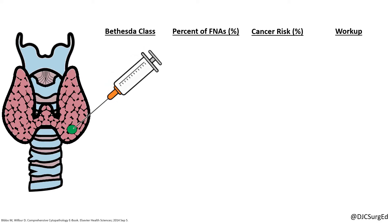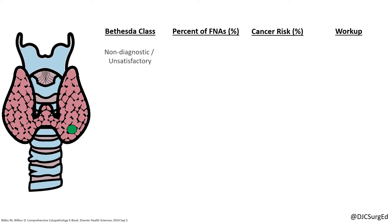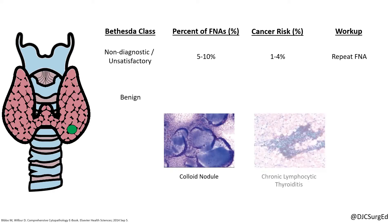Spongiform nodules should be evaluated if greater than or equal to 2 cm in size. The Bethesda criteria is used to classify cytologic interpretations of FNA thyroid biopsies. Non-diagnostic or unsatisfactory cytology occurs in 5–10% of cases and requires a repeat FNA. Benign cytology includes varying amounts of benign follicular cells, colloid, and lymphocytes, and is seen in about 60% of cases with a low cancer risk and should be followed clinically.